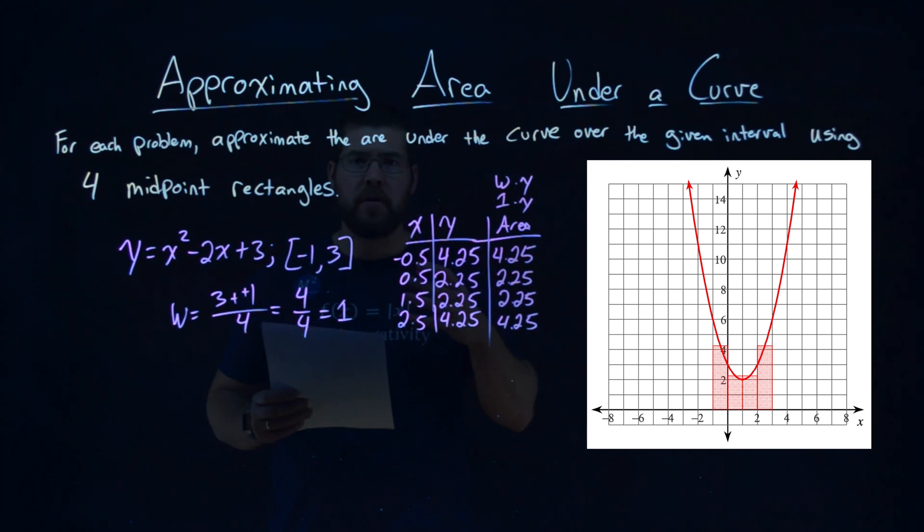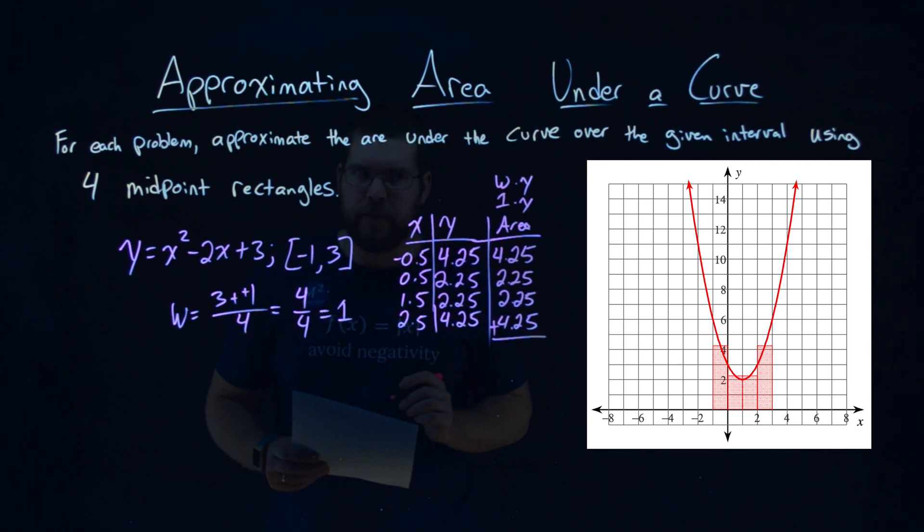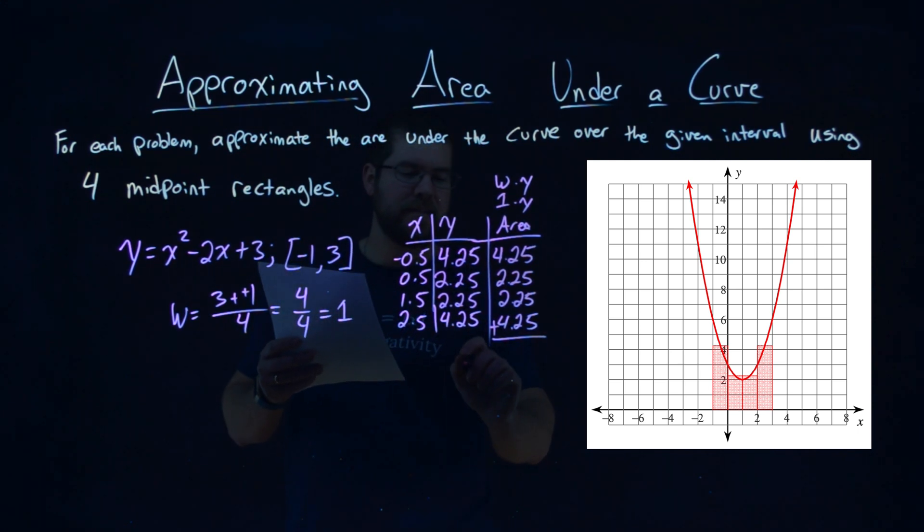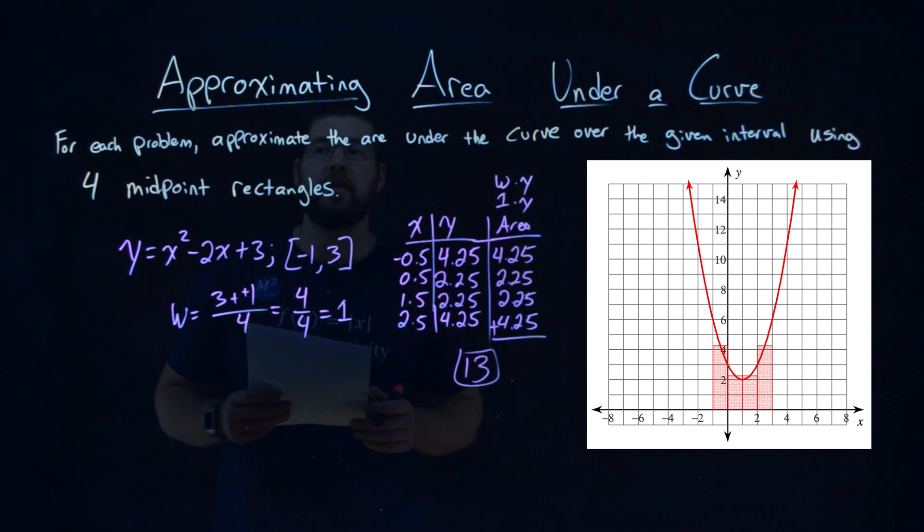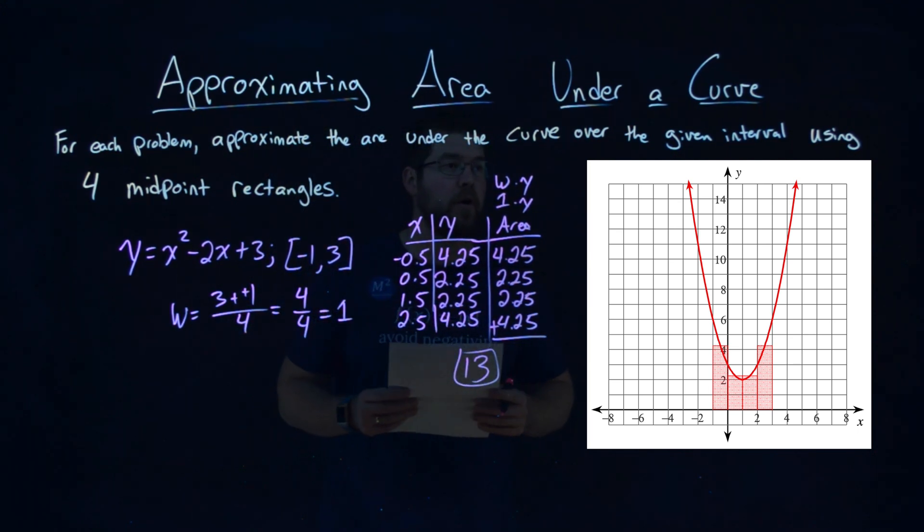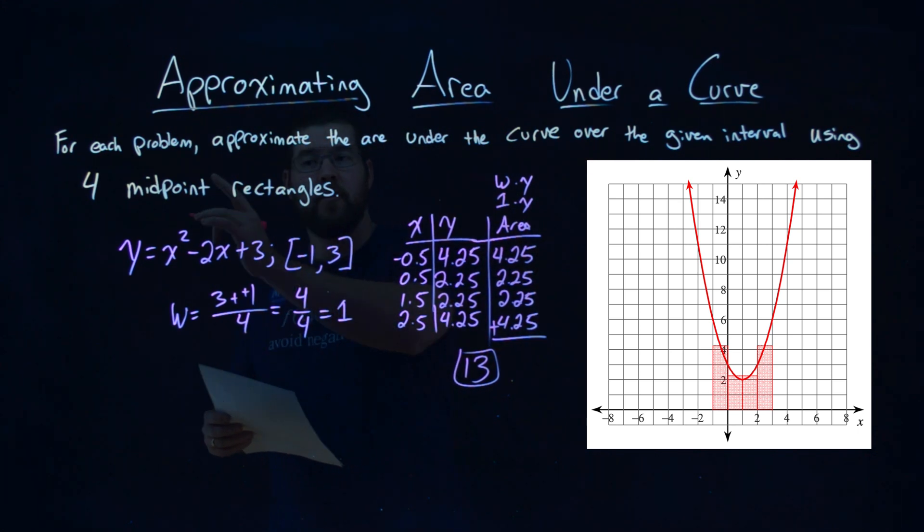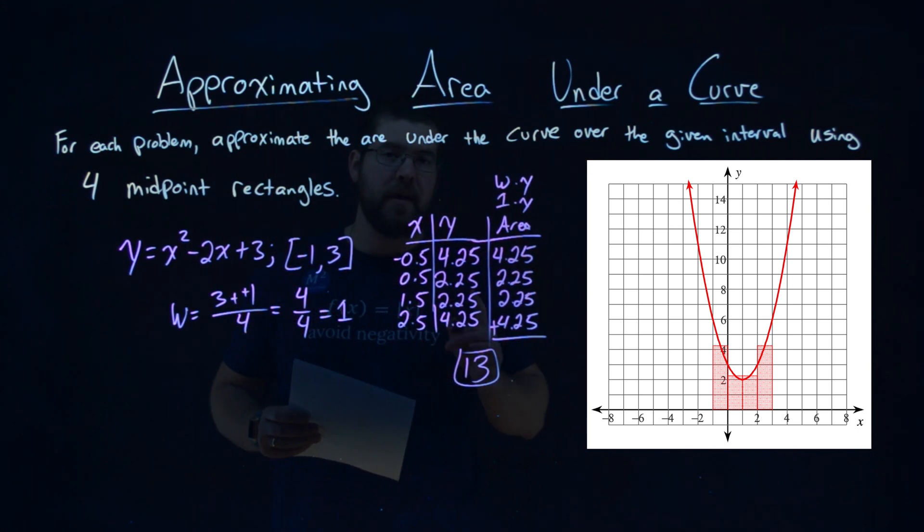Well, if you want to get the overall total approximate area under the curve, we add up each rectangle. We add up each area, and this comes out to be a lovely 13. And so that's our final answer here. The approximate area under the curve over our given interval, using four midpoint rectangles, is 13.